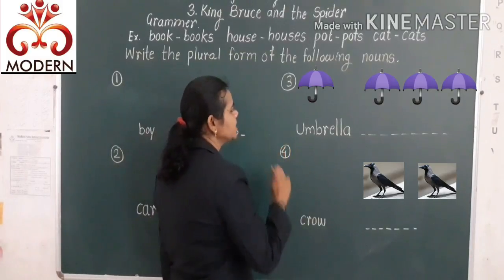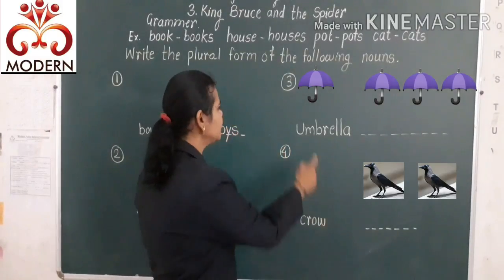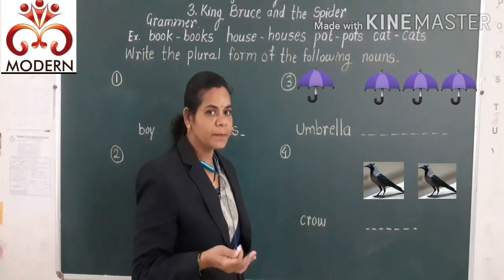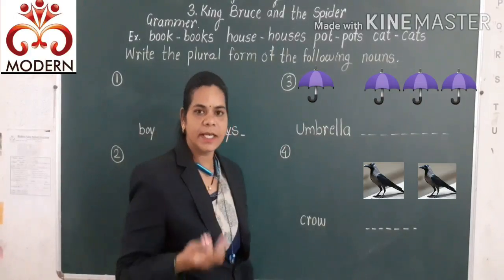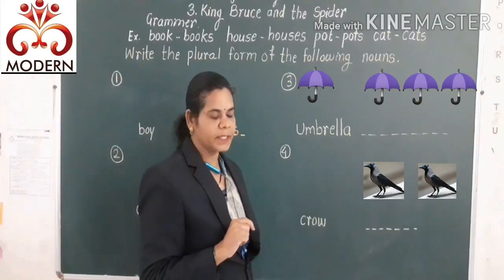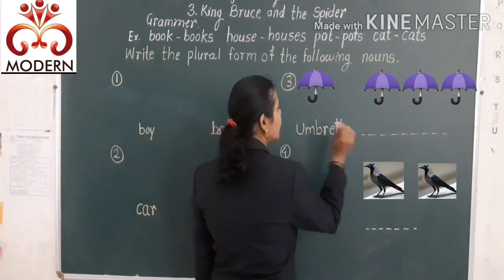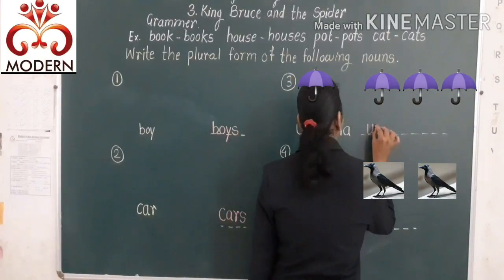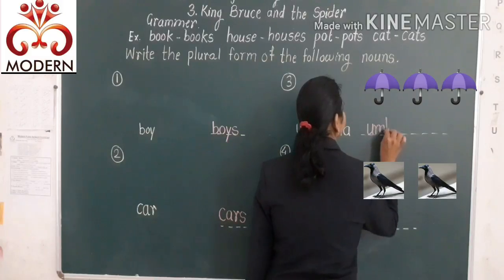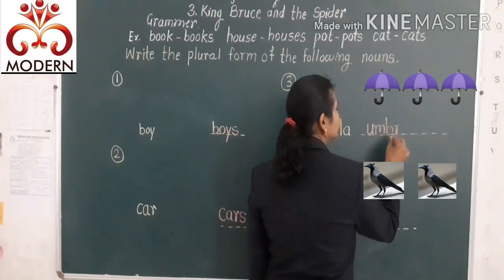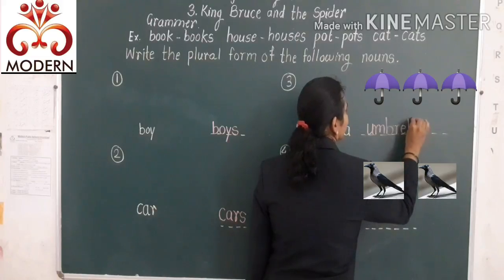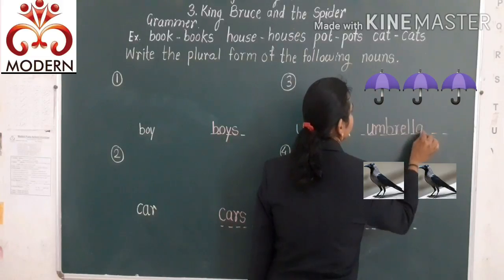The next example is 'umbrella.' Here, given one umbrella. When more than one umbrella, we add 's' to the common noun. Umbrella — umbrellas: U-M-B-R-E-double-L-A-S — umbrellas.